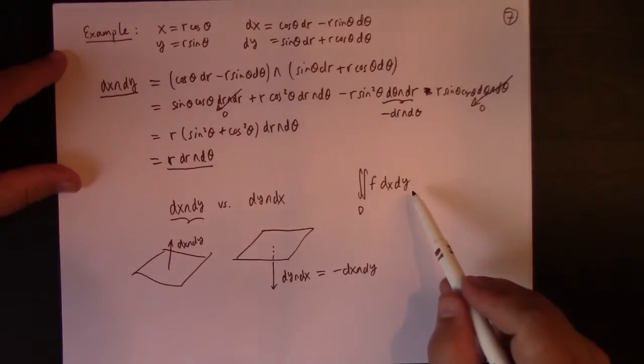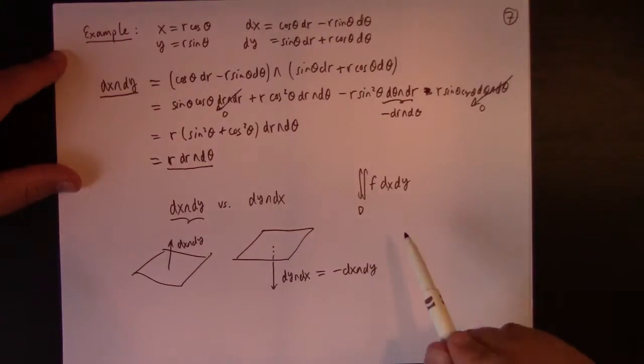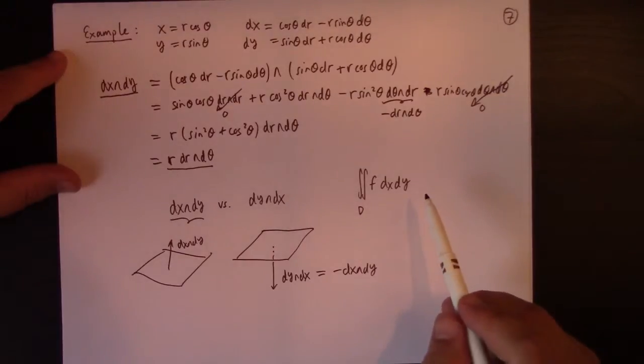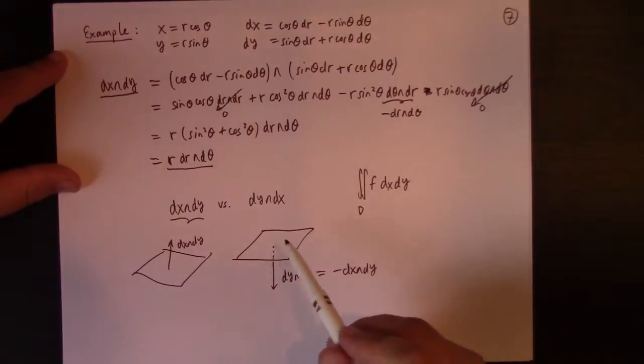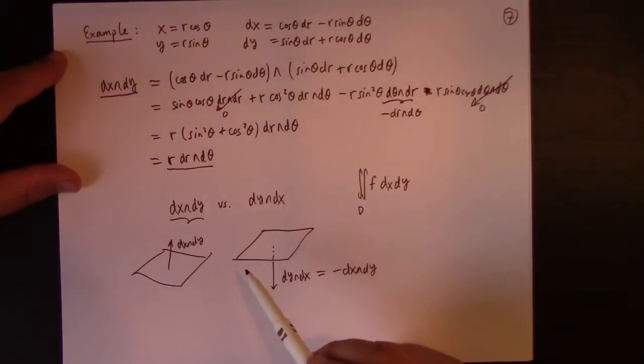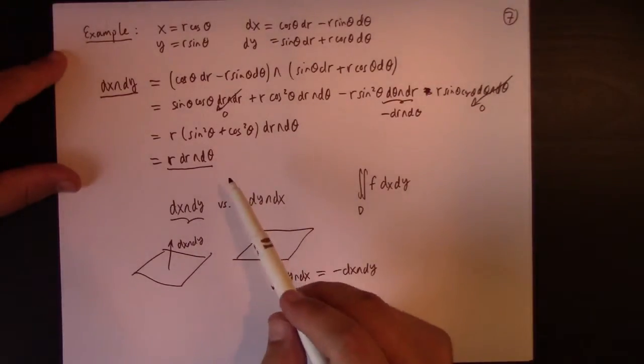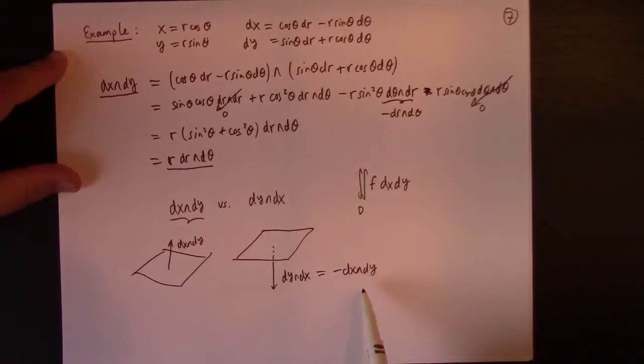And I would say the double integral that we study in Calculus 3 is not oriented, whereas the surface integral we talk about later is with respect to a choice of outward normal, or some normal, at least for the surface we can do integrals over. So the wedge product is a natural candidate for things that you want to encode orientations for.